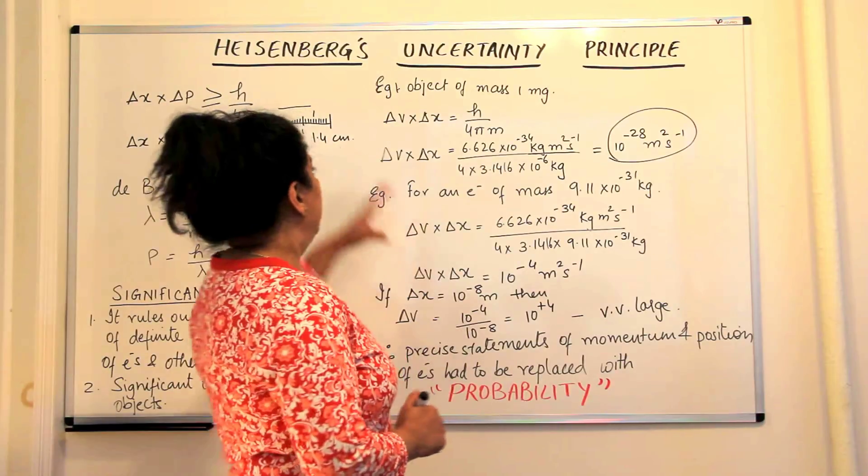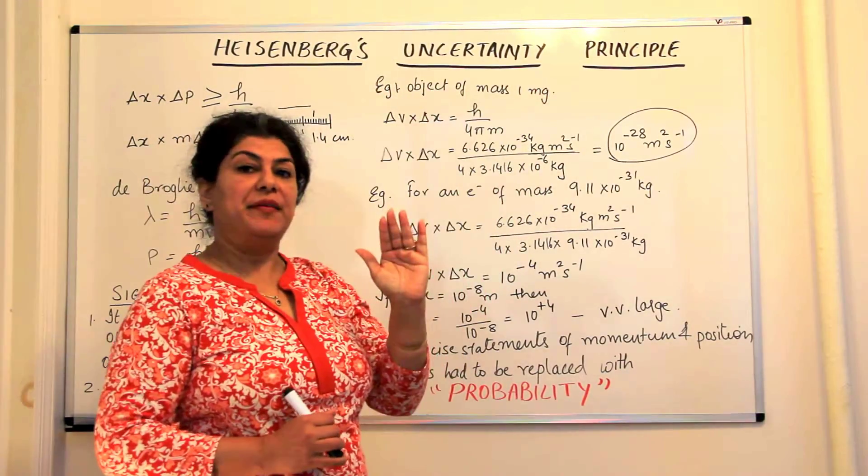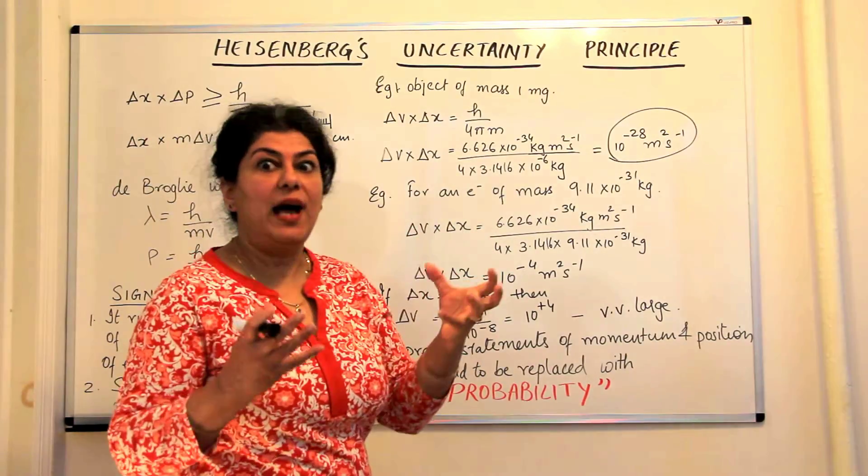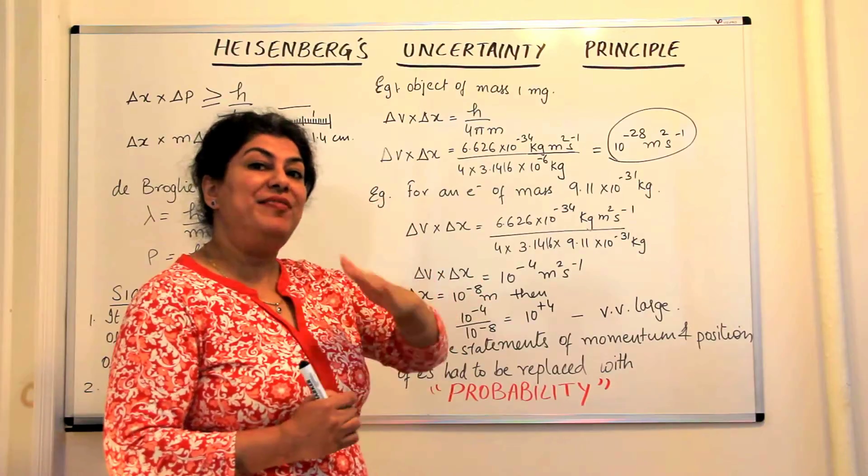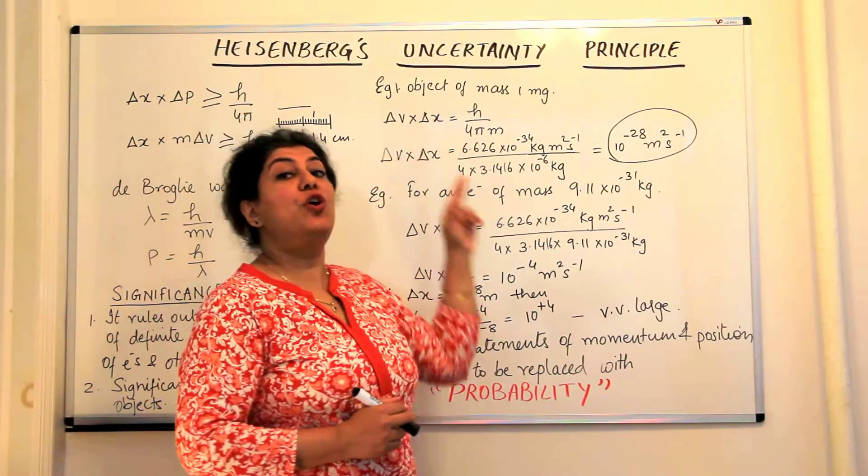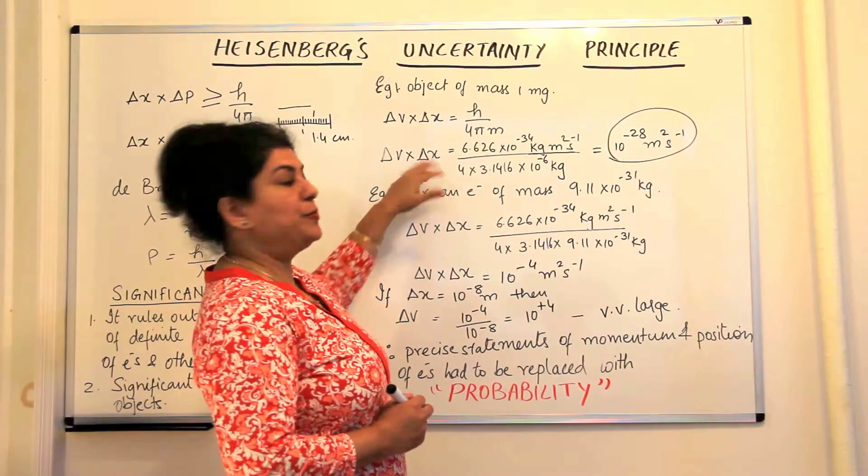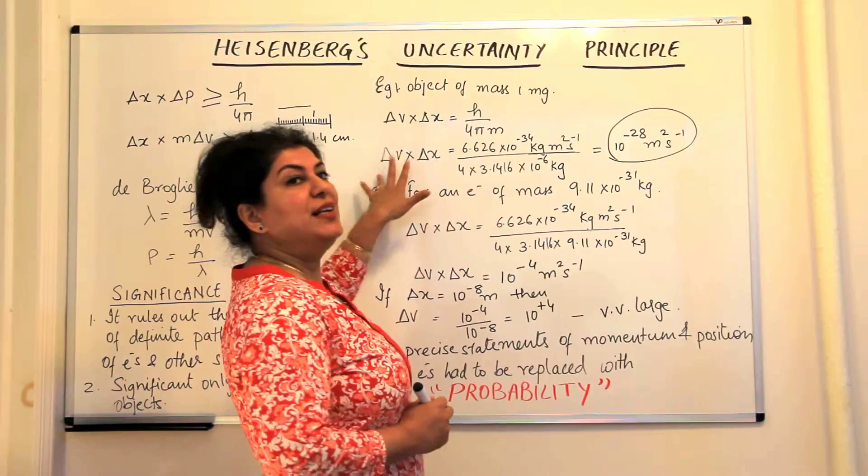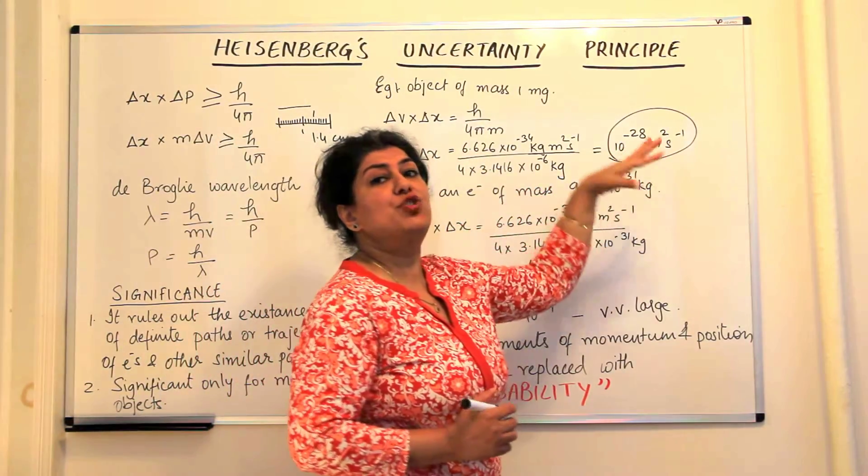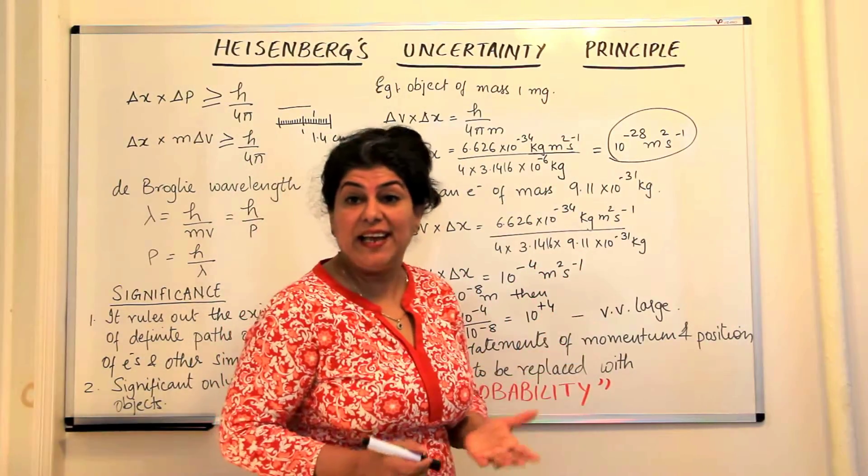I just told you that if an object has a mass of 1 mg, that mass is so large that even for 1 mg, the wavelength nature of the object would not be visible. Therefore, in Heisenberg's Uncertainty Principle, the product of the uncertainties in position and velocity is on the order of 10 to the power minus 28, which is very small and almost negligible.